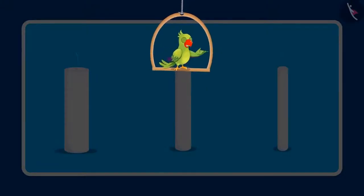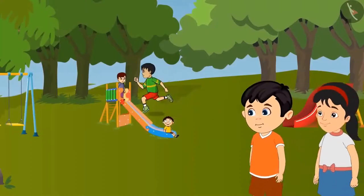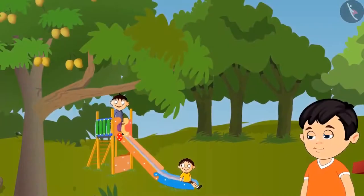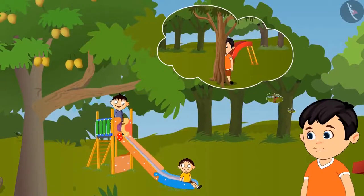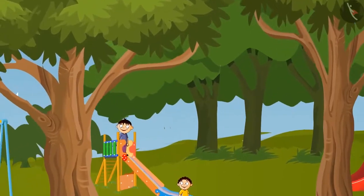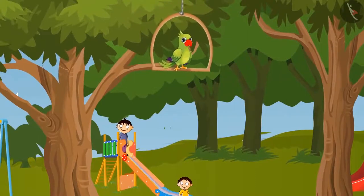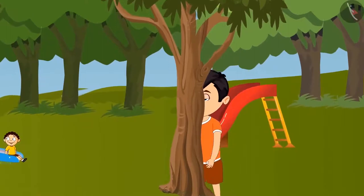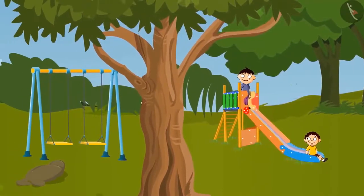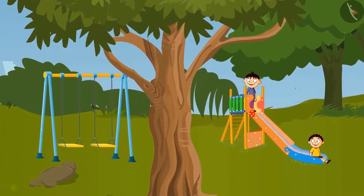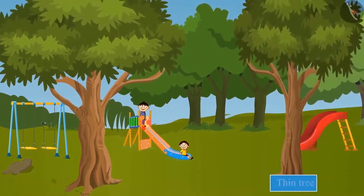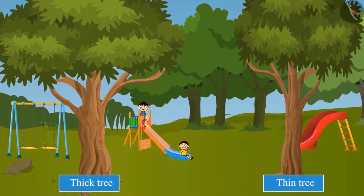So, children, today Chotu and Pinky identified the thickest and thinnest candle. The next day, Chotu and Pinky went to play in the park. They were playing hide-and-seek. It was Chotu's turn to hide. Chotu decided to hide behind a tree. Chotu saw two trees in the front. Can you tell me behind which tree Chotu should hide? This tree is thin, so Chotu cannot hide behind this. Chotu goes and hides behind another tree. Do you know why Chotu is not seen now? This tree is thick, so he can easily hide behind it. That's why Chotu chose to hide behind this thick tree.